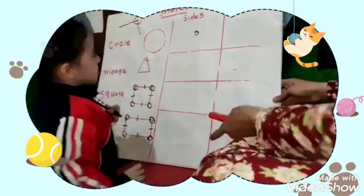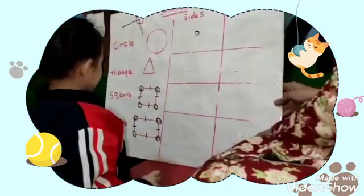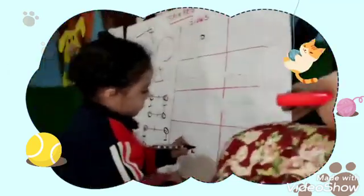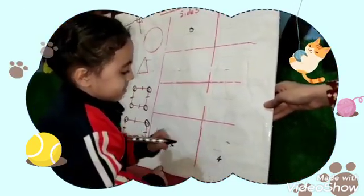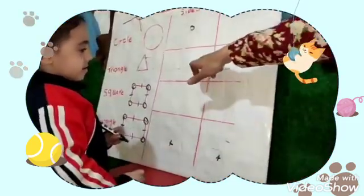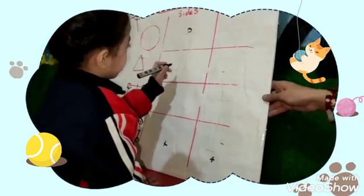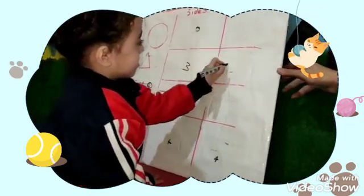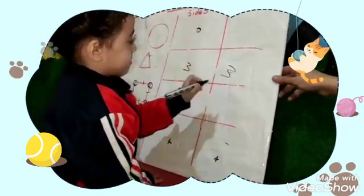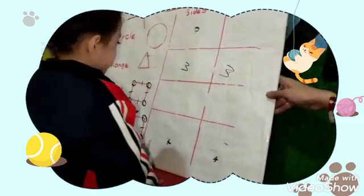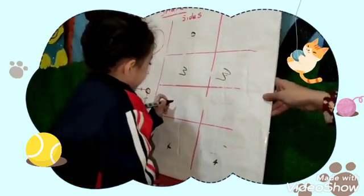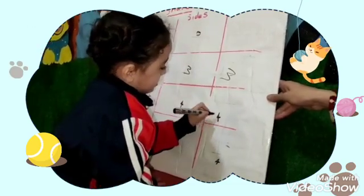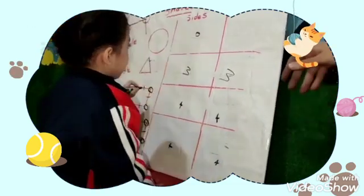How many sides for rectangle? Four. More excellent. Triangle — how many sides? Three. How many corners? Square — how many sides? Four. Corners — four. More excellent.